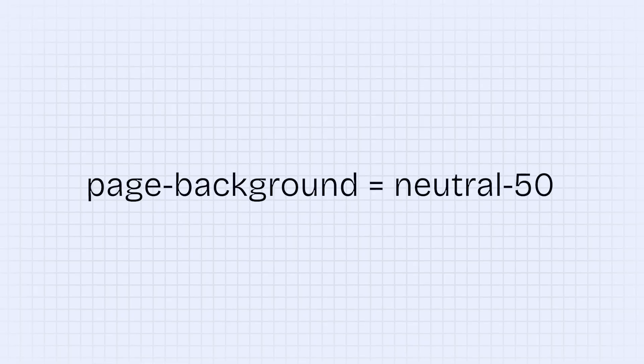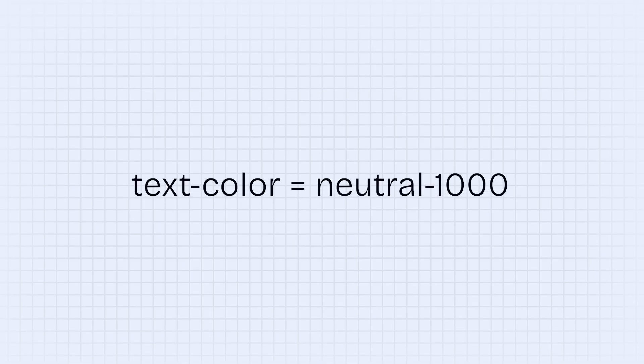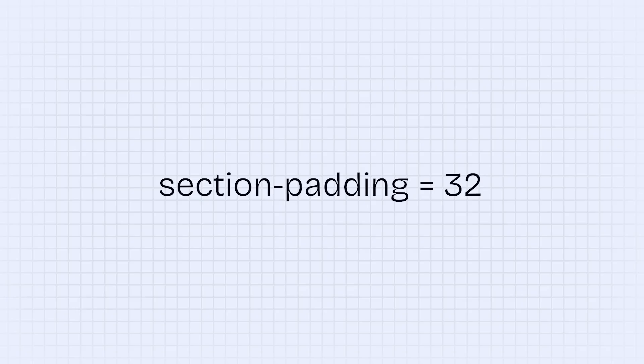It's important to never use primitive tokens on your actual components, because you won't be able to change that component without changing everything else that token references. So we want to start by defining all the primitive tokens in our design system — all the shades of our brand color or all the numbers we might use. If you watched my video on the 4 pixel rule, you'll know that a great way to create consistent-looking websites is to make your tokens divisible by 4 pixels, so all the spacing, padding, and corner roundness should be divisible by 4. Then we map those primitive tokens onto our semantic tokens, like setting page background to neutral 50, text color to neutral 1000, and section padding to 32.